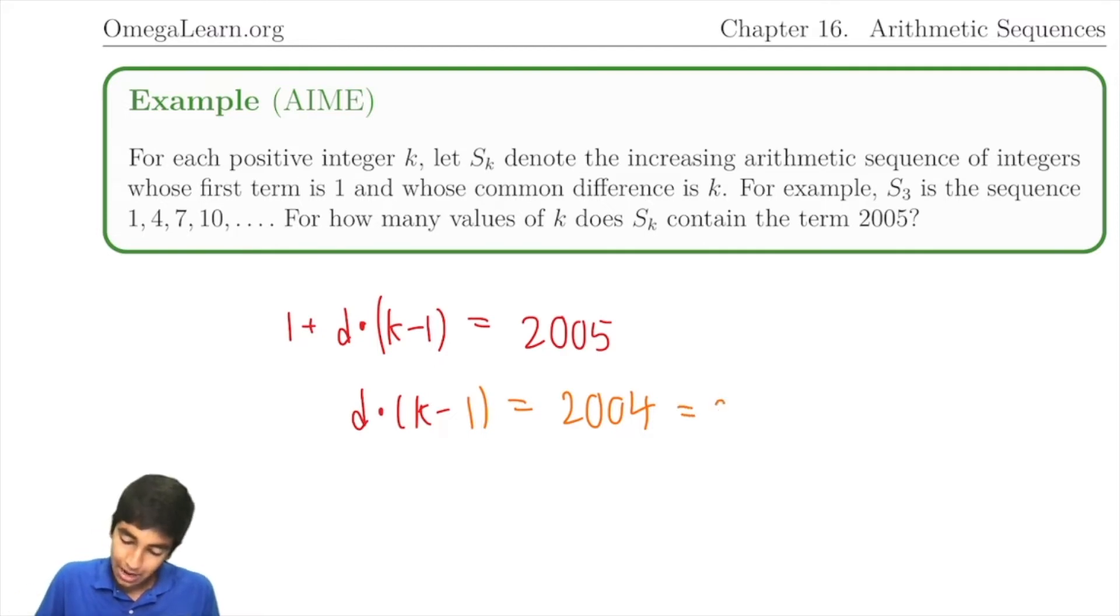This is 2 times 1002, which is equal to 2 times 3 times 334, which is times another 2 times 167. So, 2 squared times 3 times 167.